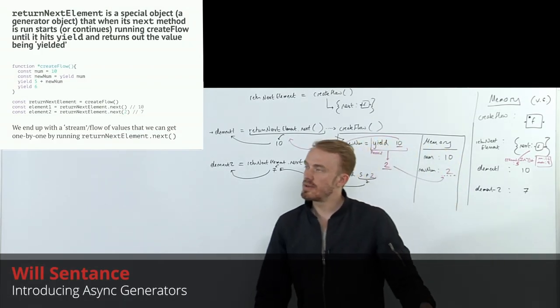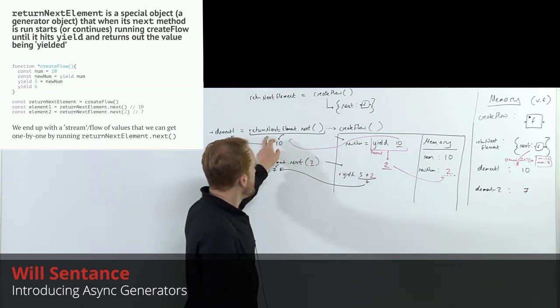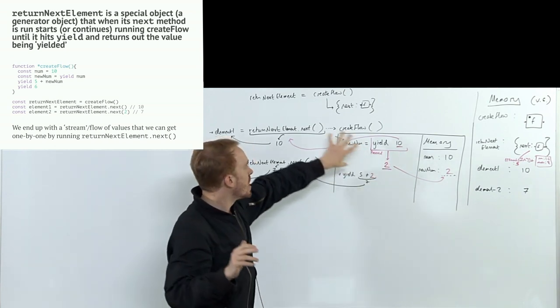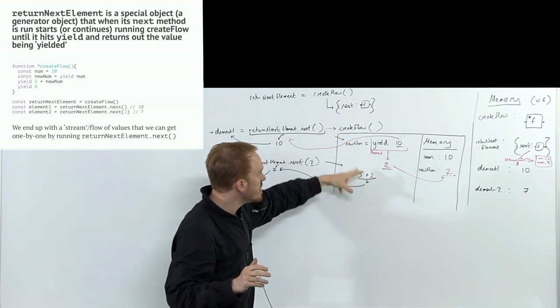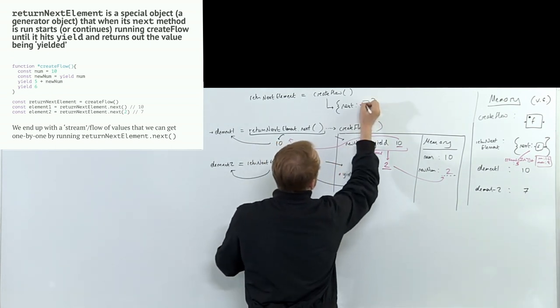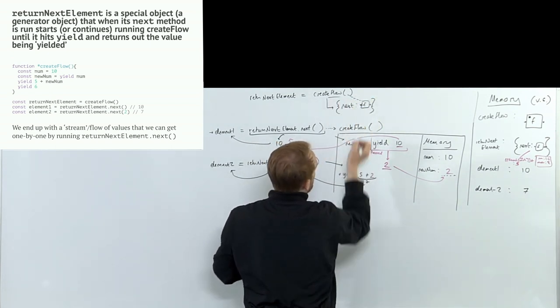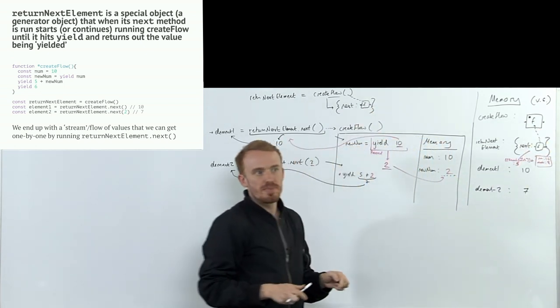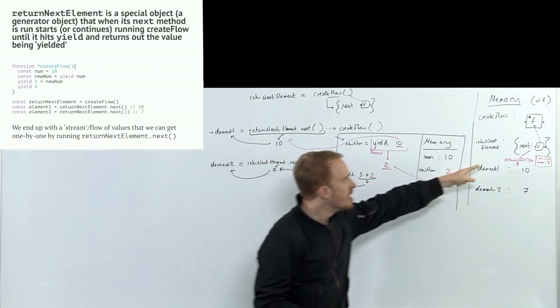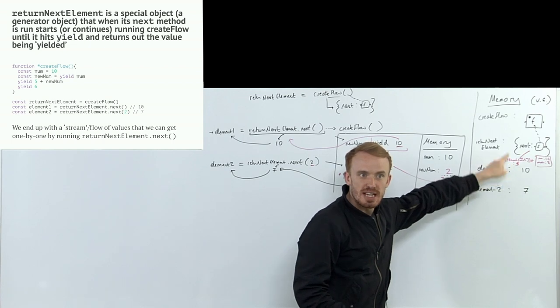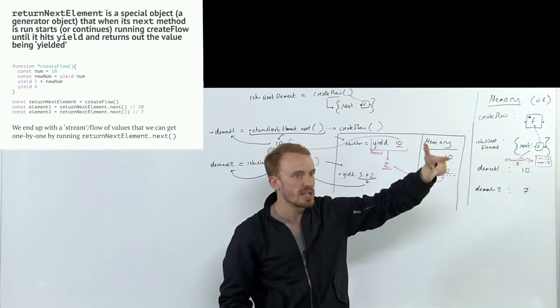Return next element is a special object with a next property on it, a method that when called runs, starts, or continues the calling of create flow, which is where it was born. It was born by create flow. And so it has this ability to go and execute that function and then continue executing it by holding on to the memory in that function execution context and the position in that function execution context and then returning to that.